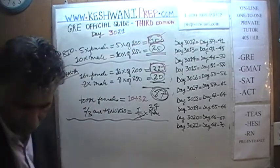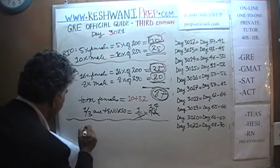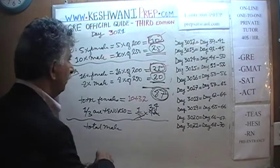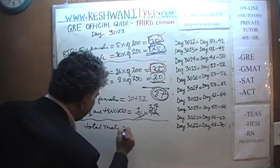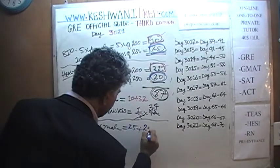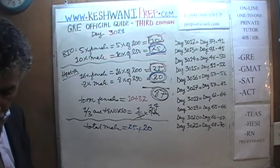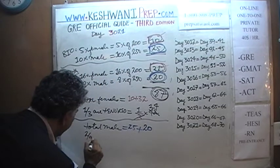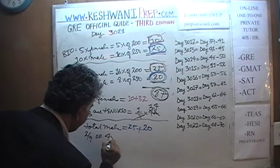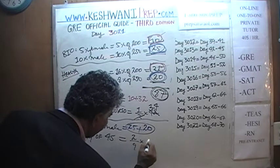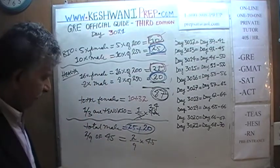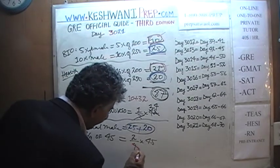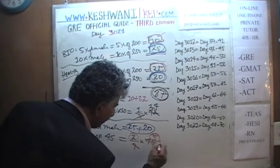Now we take care of the male faculty. Total male across the two departments: 25 (Biology) + 20 (Health Sciences) = 45. We are told two-ninths of them are tenured. Two-ninths of 45: 45 ÷ 9 = 5, so (2/9) × 45 = 2 × 5 = 10. So 10 male faculty are tenured.